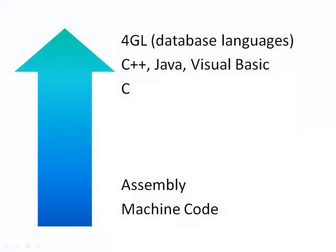There is also a distinction between high-level and low-level programming languages. Machine code and assembly, being very close to the processor where each instruction does very little work, are generally considered low-level. Programming languages like C, C++, BASIC, Java, C Sharp, and even fourth-generation database languages are considered high-level. C allows quite a lot of direct access to the underlying hardware, so it's often considered lower-level than Java or Visual Basic, but all of these are still high-level programming languages.